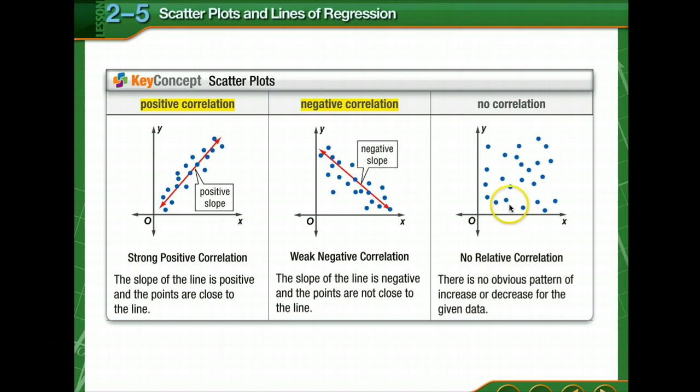If there's no correlation, it's hard to figure out where to draw that line. There's no obvious pattern of increase or decrease for the given data. So this scatter plot is said to have no correlation.